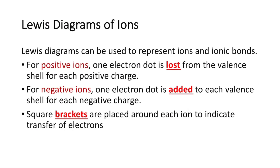Lewis dot diagrams of ions. So what we were doing before was of atoms or molecules. This is for ions. Lewis diagrams can be used to represent ions and ionic bonds, same as a Bohr model can. For positive ions, one electron dot is lost from the valence shell for each positive charge. For negative ions, one electron dot is added, so it gains an electron, to the valence shell for each negative charge. Square brackets are placed around each ion to indicate the transfer of electrons. You'll notice this is very similar to Bohr models. The only difference is that we're only focusing on the valence shell instead of each ring of the electrons' shells.